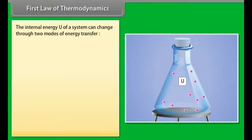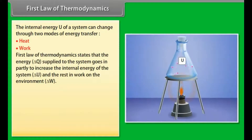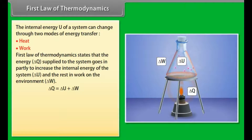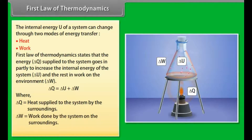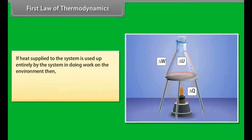First law of thermodynamics: the internal energy U of a system can change through two modes of energy transfer — heat and work. The first law states that the energy delta Q supplied to the system partially increases the internal energy delta U and the rest does work on the environment delta W. So, delta Q = delta U + delta W. If heat supplied is used entirely in doing work on the environment, then delta U = 0, giving delta Q = delta W.